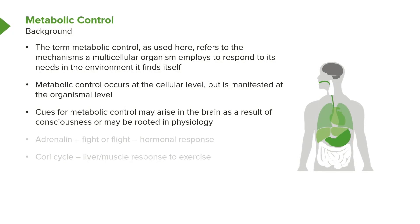The cues for metabolic control may arise in the brain as part of a conscious process or may be rooted in physiology. For example, adrenaline and the fight-or-flight response is initiated as part of an awareness that our brain becomes, and this is given as a hormonal response. The Cori cycle, by contrast, is an unconscious process that's managed between our liver and our muscle in response to exercise.